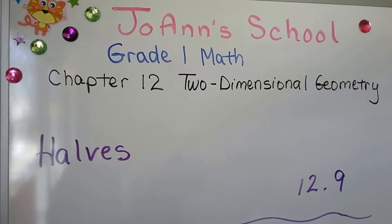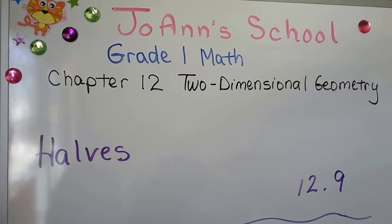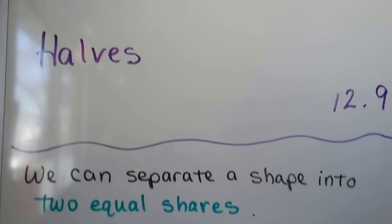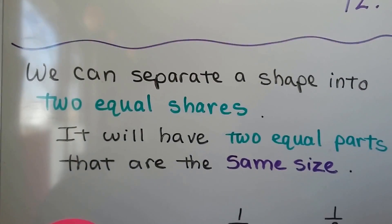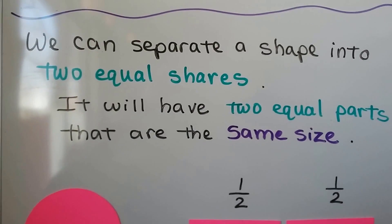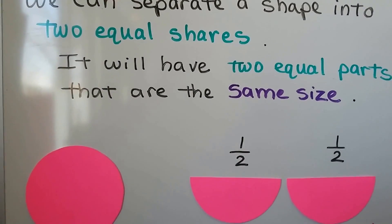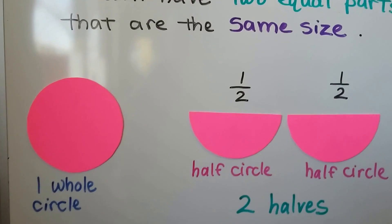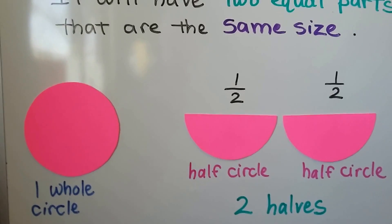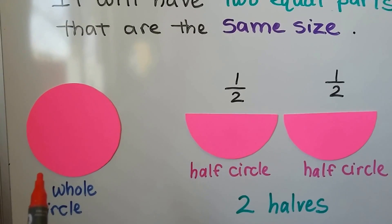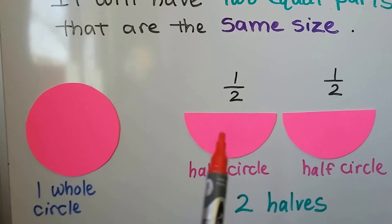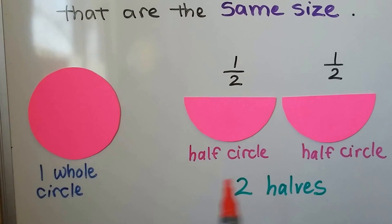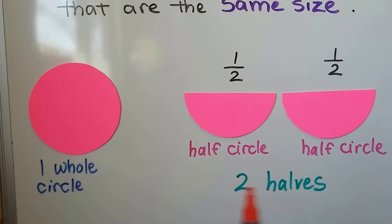We're going to talk about halves in this video. We're at lesson 12.9. We can separate a shape into two equal shares. It'll have two equal parts that are the same size. We have one whole circle and if we separate it into two equal shares, we'll have a half circle and a half circle. We'll have two halves.